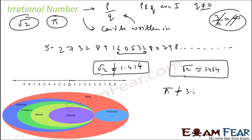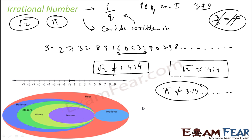If you try to find the actual value of pi, the decimal list continues infinitely. So: numbers that can be written in P by Q form (where P and Q are integers and Q ≠ 0) are rational numbers. Numbers that cannot be written in that form are irrational numbers. Pi, root 2, and root 3 are all good examples of irrational numbers.